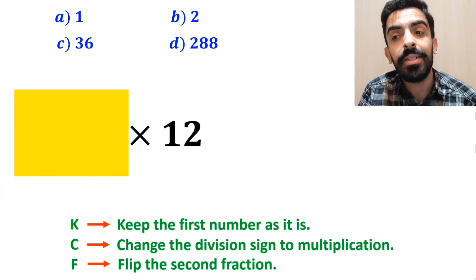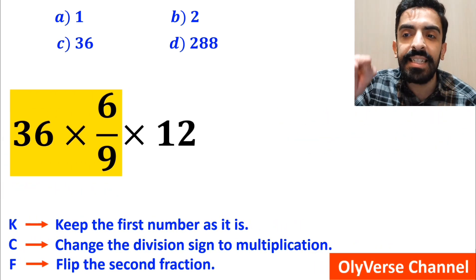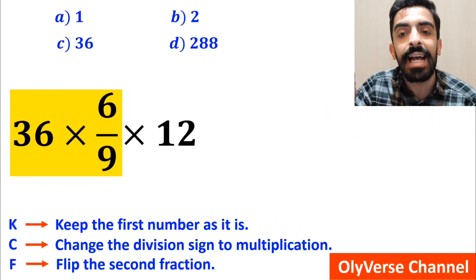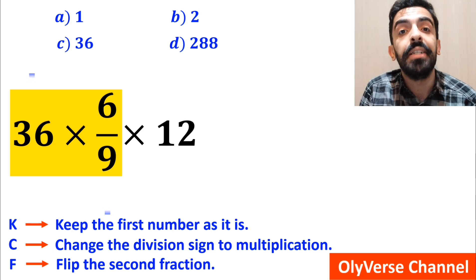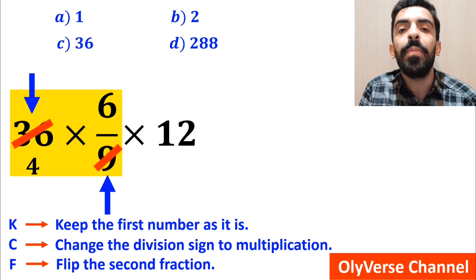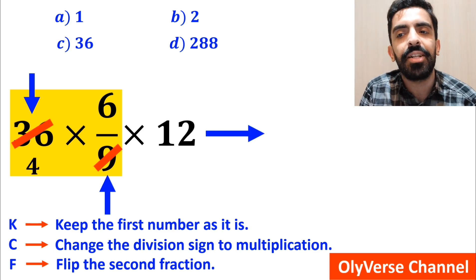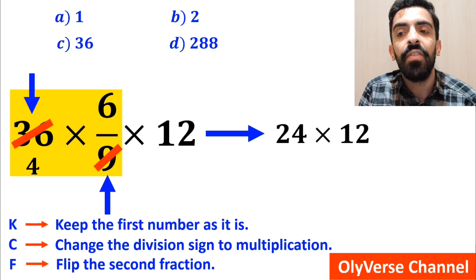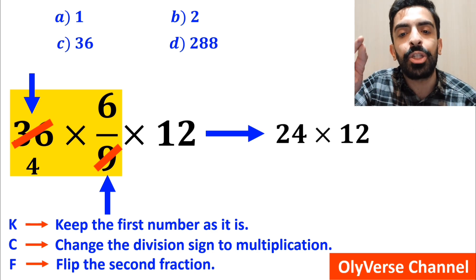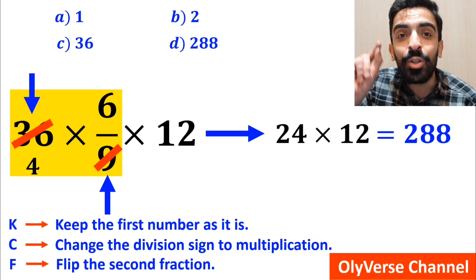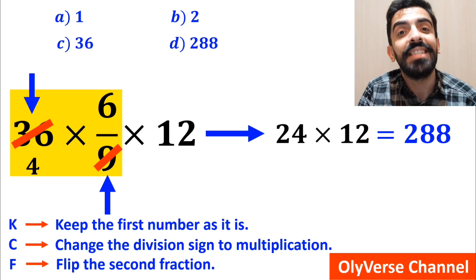So, we remove the highlighted part and write this expression at 36 multiplied by 6 over 9 and again multiplied by 12. Now, we can easily simplify the number 36 with the 9 in the denominator, and instead of this expression, we can write 24 multiplied by 2, which finally gives us the answer 288. That's great!